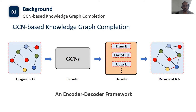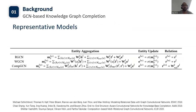The encoder generates representations for entities and relations in a KG. Then the decoder uses the generated representations to predict values in the adjacency tensors. Since there exists a bijection between adjacency tensors and graph structures, the prediction can be seen as a recovery of the original graph structures, allowing the decoder to predict links missing in the original graph. We present the entity aggregation, entity update, and relation transformations for three popular GCNs in KGC: RGCN, WGCN, and CompGCN. The embedding update processes have three main parts: aggregating information from graph neighborhoods, transformations for aggregated entity representations, and transformations for relation representations.